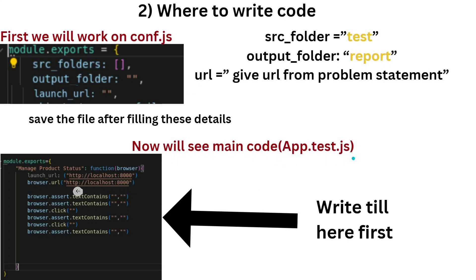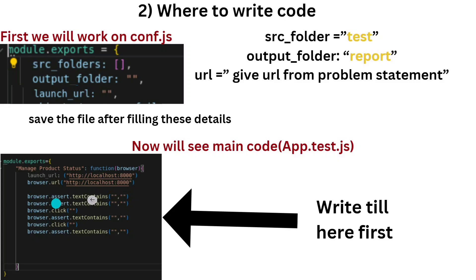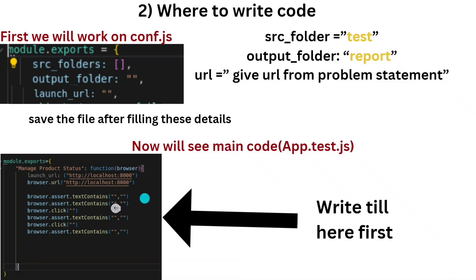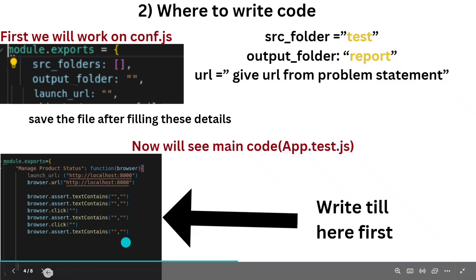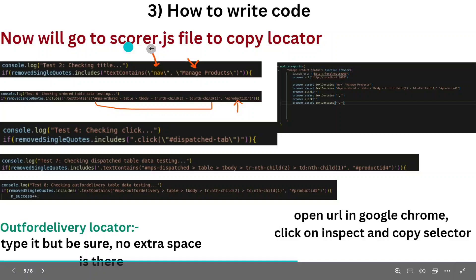Now for the main code, open app.test.js. First write 'module.exports' — write this from your own. Then write the browser assert context steps: there are about six lines of code. Use double quotes and commas in the correct format as shown. After this, we move to scorer.js.